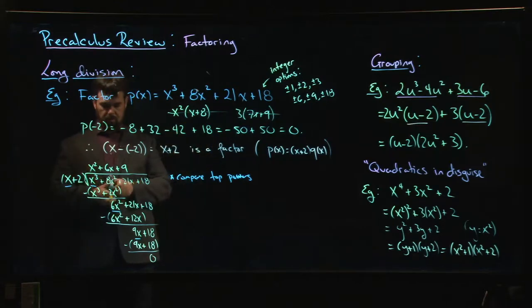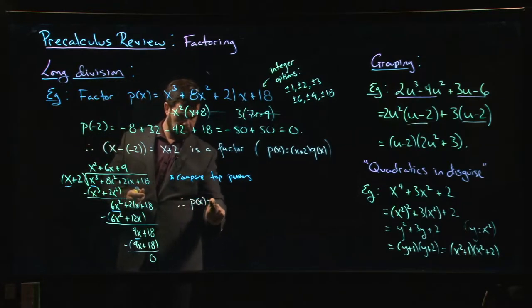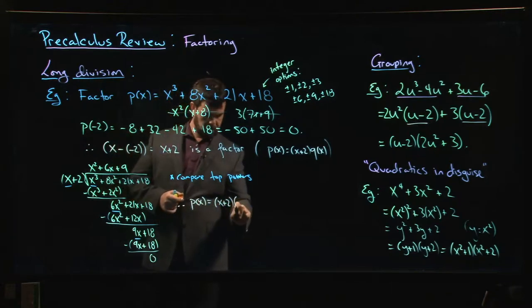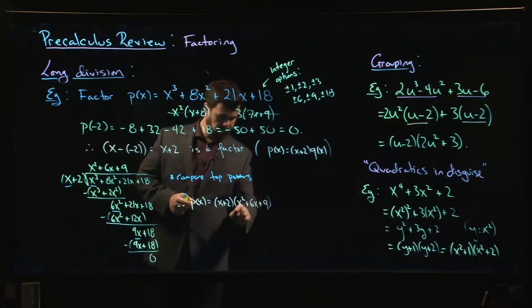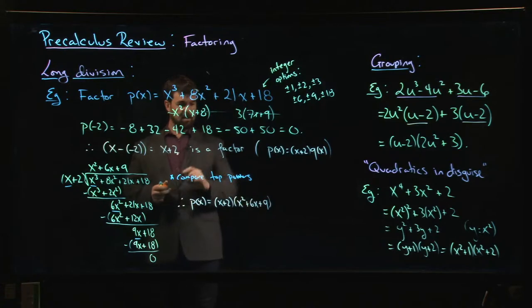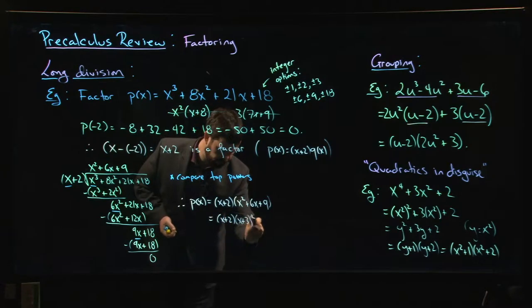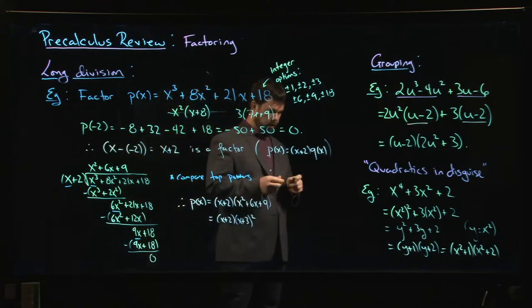So now I know that my P of x can be written as x plus 2 times x squared plus 6x plus 9. And you might ask if you can factor that quadratic. You can. In fact, it's a perfect square. This is x plus 2 times x plus 3 squared. And then you're done.